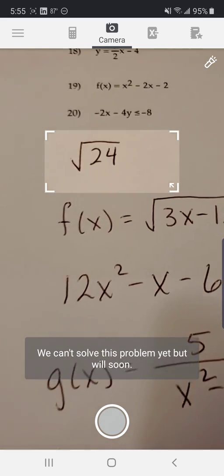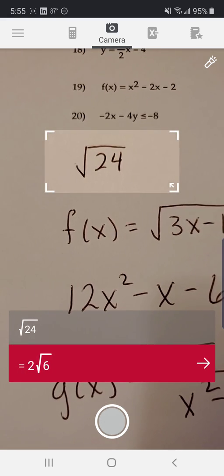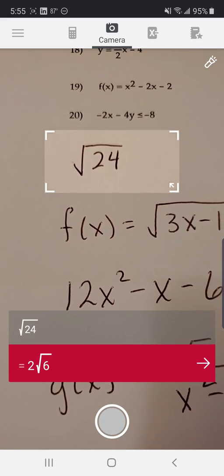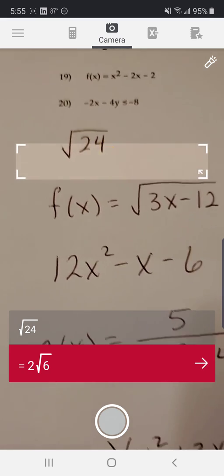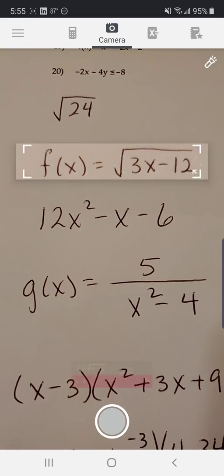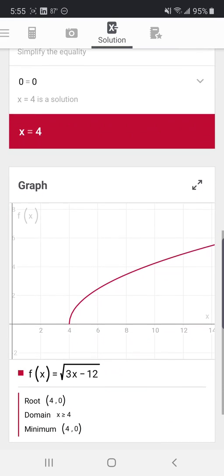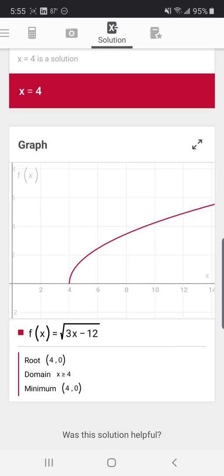Okay, so now for something even more awesome. Photomath also recognizes handwritten problems. So it'll simplify radical expressions, it'll break it down for you. It recognizes the function notation. And if we analyze that function, you're going to see that it provides the graph, the x-intercept, and the domain, which is what you have to find sometimes for a radical function. You need to find the domain, and Photomath gives that to you.